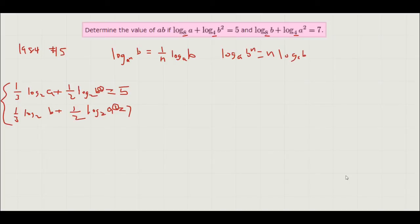So using this we see that 1 half log base 2 of b squared turns into 1 half times 2 times log base 2 of b, which is just equal to log base 2 of b. And similarly 1 half log base 2 of a squared equals log base 2 of a.